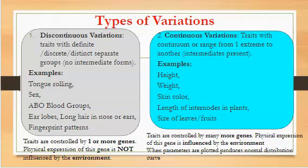By parameters I mean examples like height, which is measured in centimeters. The height of students in your class or family members would show quite a wide range — some could be 110 centimeters, others five foot three or six feet. We also have weight, where people have quite a variety. These traits have a wide range of characteristics within a particular parameter, and their intermediates are present, unlike discontinuous variation where there are no intermediate forms.